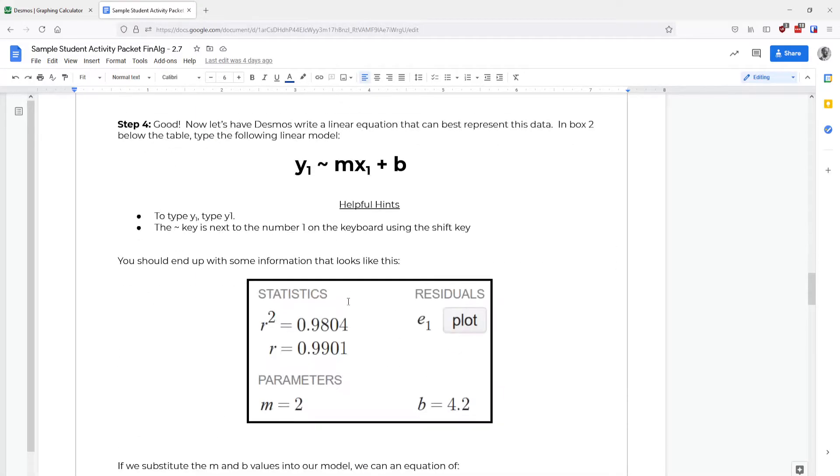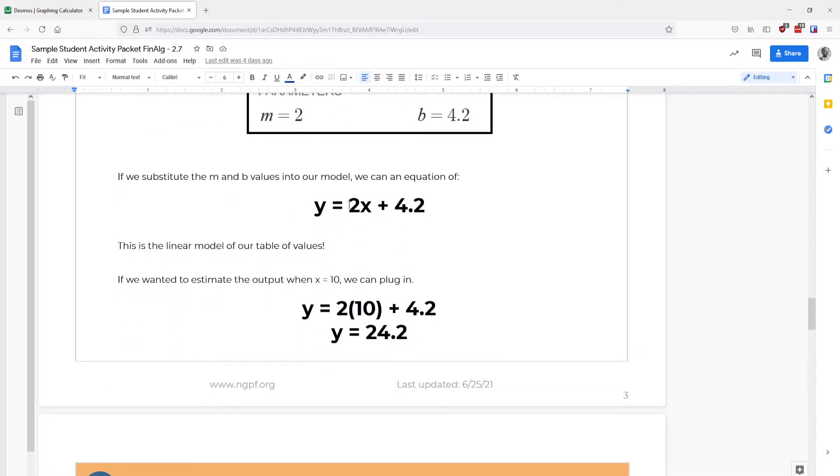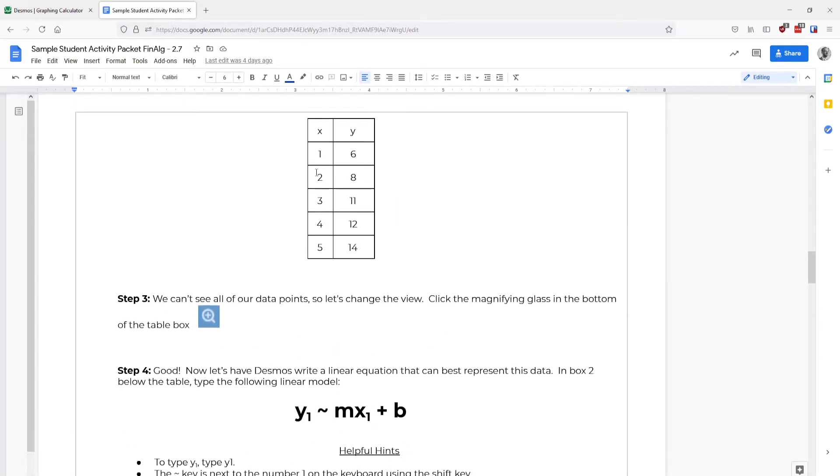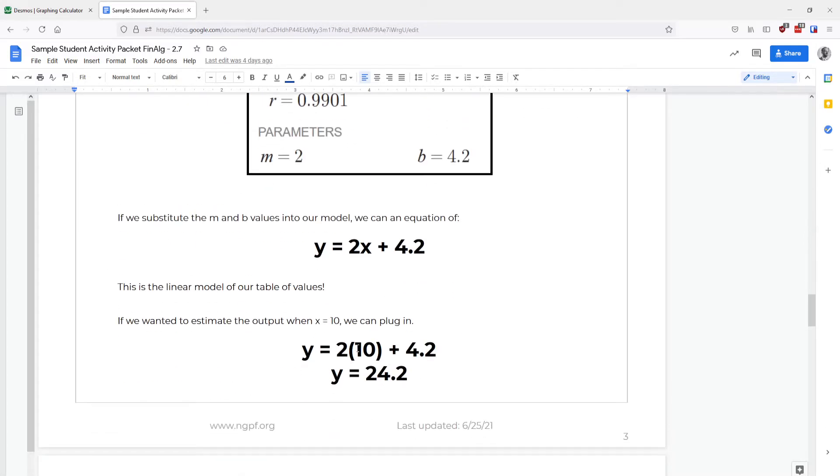That's not on our chart here. But now that we have this equation, we can actually put a 10 in for X and get an estimate about what the output would be. So we know that if we were to extend this chart down to 10 instead of stopping at five, that we would expect it to be the point 10 comma 24.2.